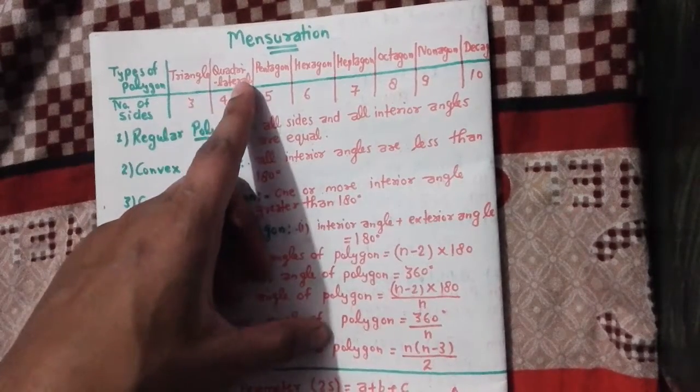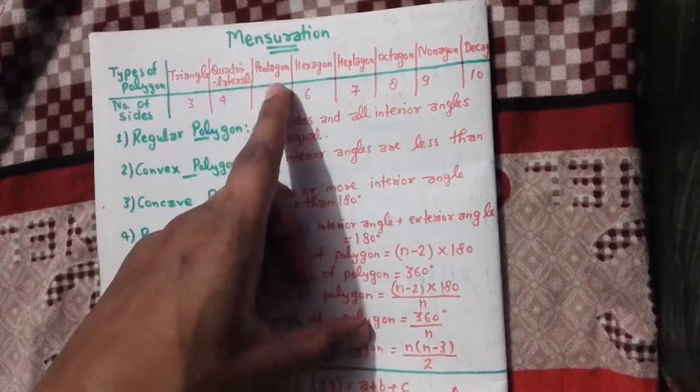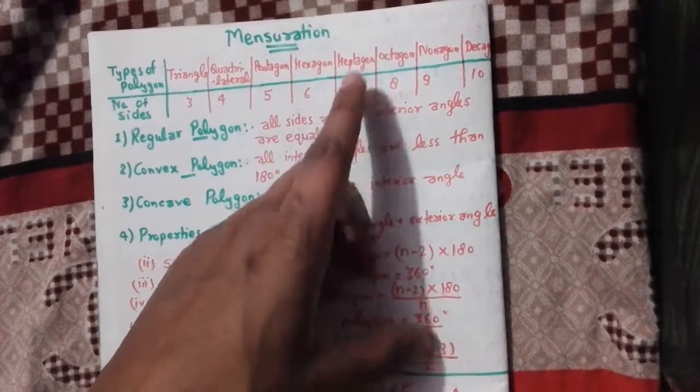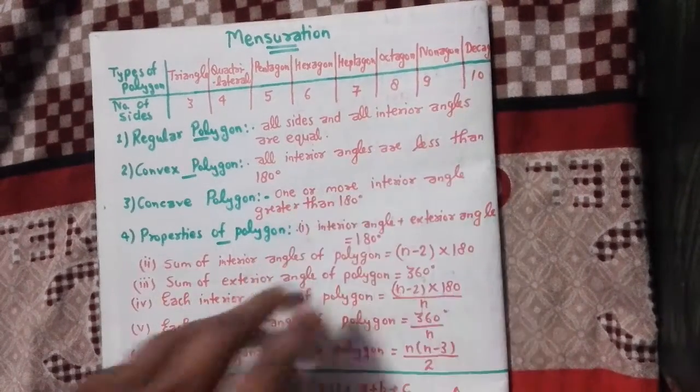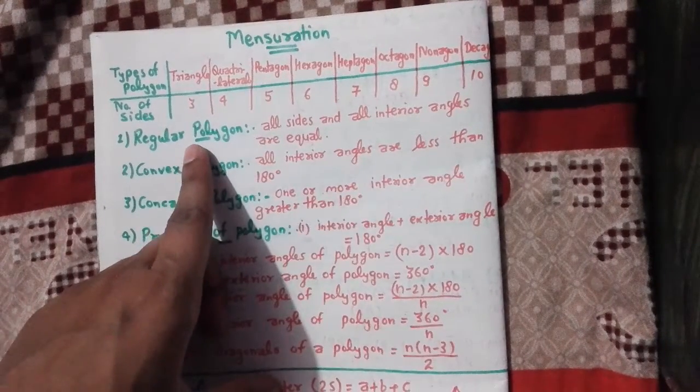Triangle, quadrilateral. Triangle has 3 sides, quadrilateral 4. Pentagon 5, hexagon 6, heptagon 7, octagon 8, nonagon 9, decagon 10. And what is a regular polygon?